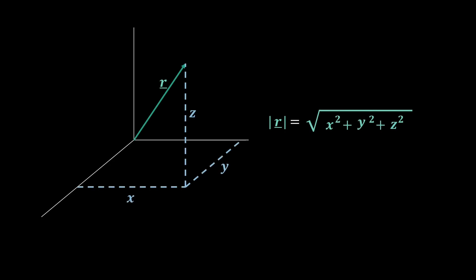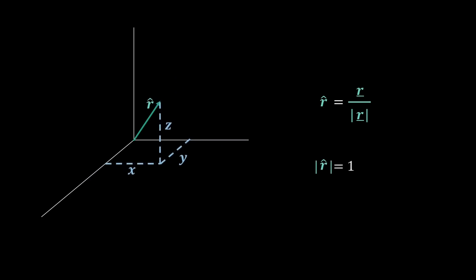which leads on to the definition of a unit vector. This is a vector that has a magnitude of 1, hence we just take the vector itself and divide by its magnitude. We denote this unit vector with a little hat, as shown here.